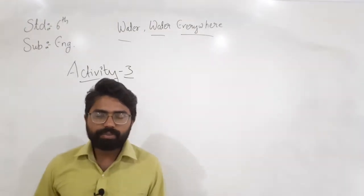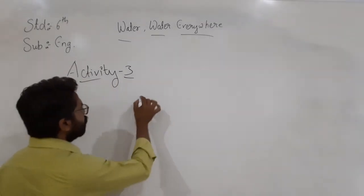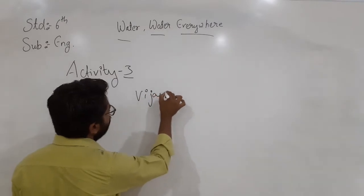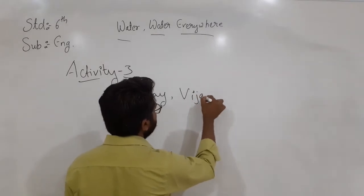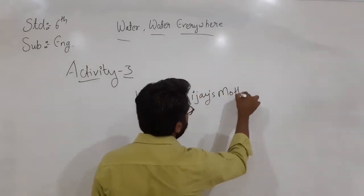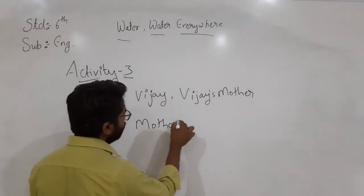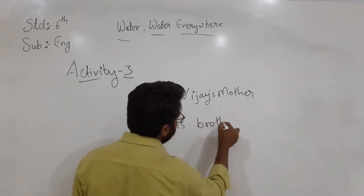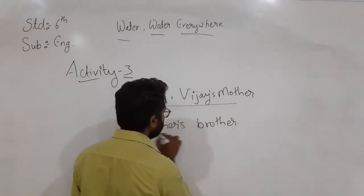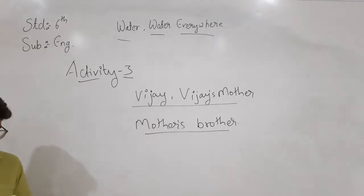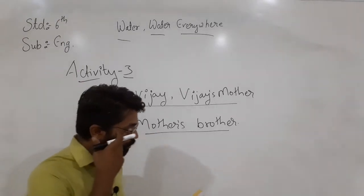So, how many characters have been mentioned in this story so far — you have to write them. The first character is Vijay. The second one is his mama, means Vijay's mother. And the last one is mother's brother. So these are the three characters that have been mentioned in the first part of this story.